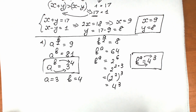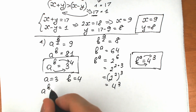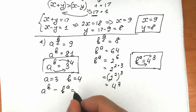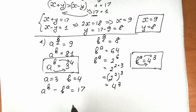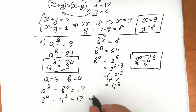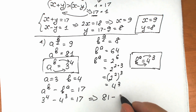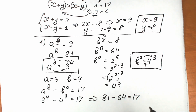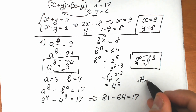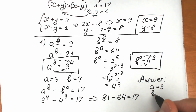Let's verify. We have a to the power b minus b to the power a equal to 17. Substituting a equals 3 and b equals 4: 3 to the fourth minus 4 to the third equals 81 minus 64, which equals 17. Absolutely correct! So our answer is a equals 3, b equals 4.